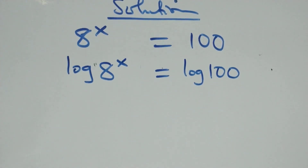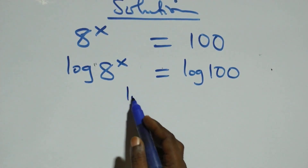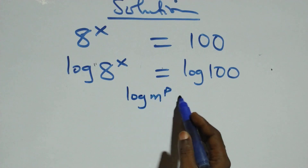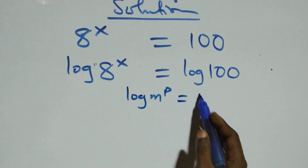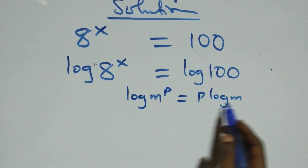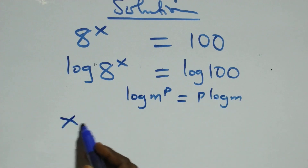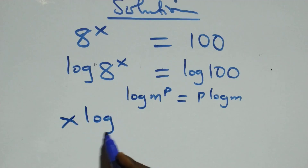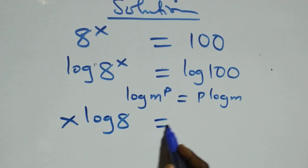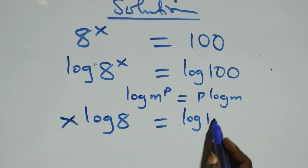The next step: we apply the power rule of logarithms, where log m raised to power p is the same thing as p log m. So we take the log on both sides, and all we have becomes x log 8 equals to log one hundred.